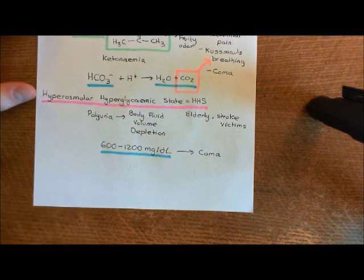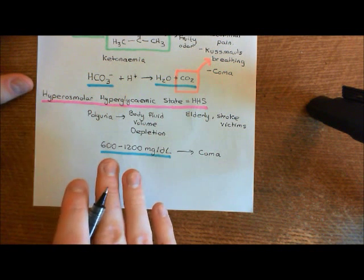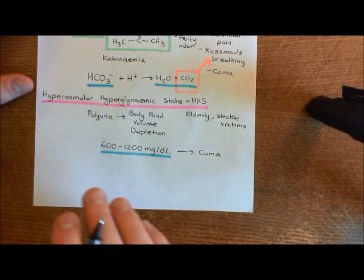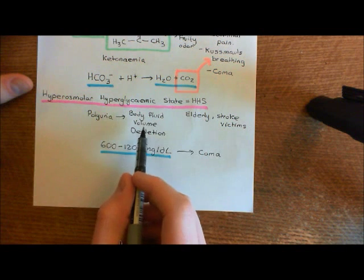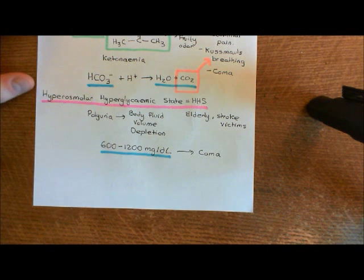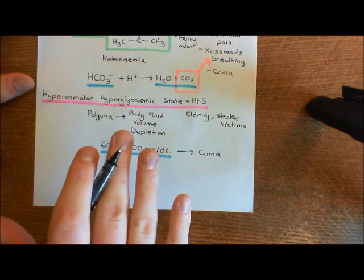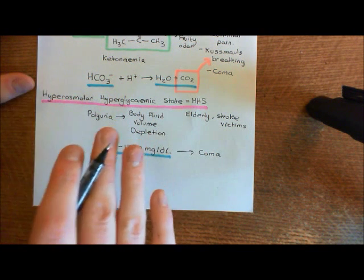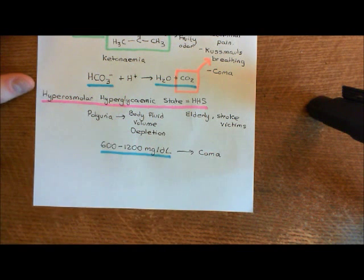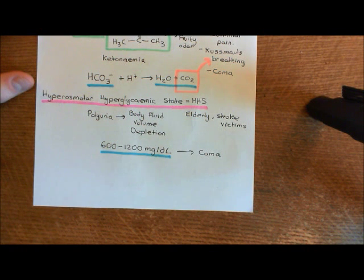The cure for hyperosmolar hyperglycemic state is, obviously, to give the patient something to drink. You need to increase the body fluid volume, so water is the treatment for HHS. That's the second acute complication of diabetes mellitus, and it can occur in any of the different types of diabetes mellitus.